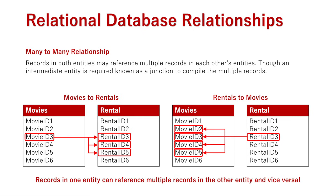To summarize: a one-to-one relationship means one record in one entity can only reference one record in another. A one-to-many relationship means one record can reference many records in another entity, but those records can only reference one back. A many-to-many relationship means one record in one entity can reference multiple records in the other, and those records can do exactly the same in return.